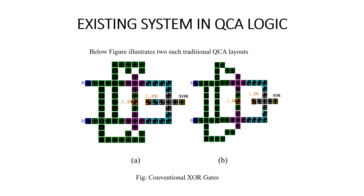This is the existing system in QCA logic. Based on the same inverter logic we have seen, we have implemented QCA logic to implement the XOR gate. This conventional method is also implemented based on the conventional logic seen earlier.